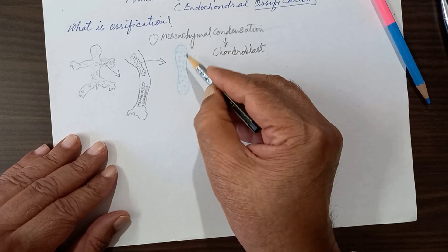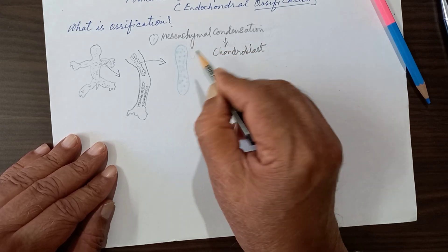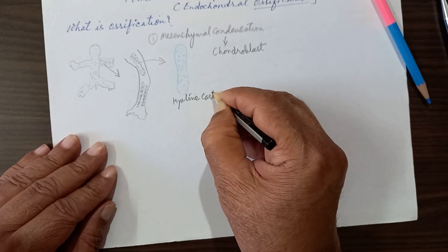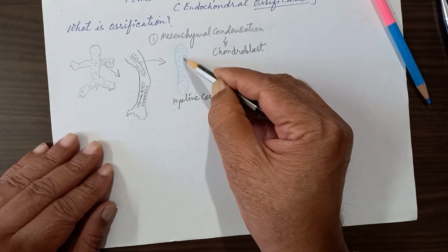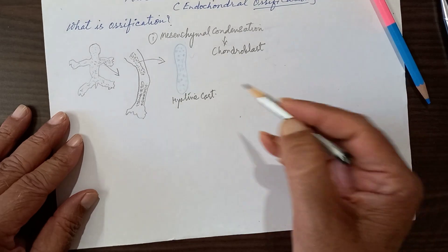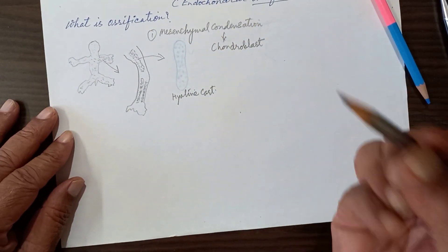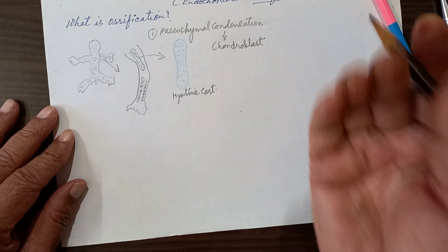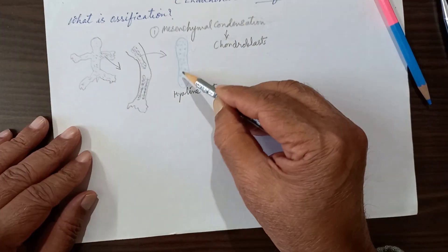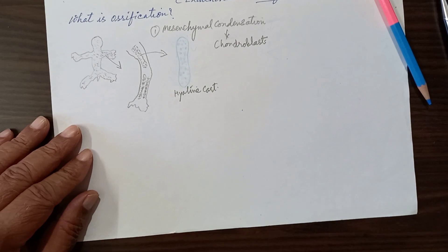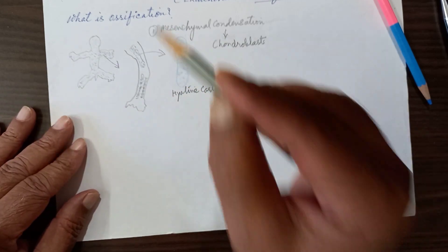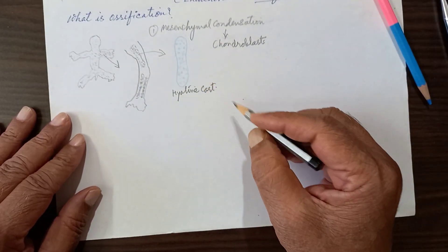The whole mesenchymal condensation is now cartilaginous cells, and this cartilage is a hyaline cartilage. This hyaline cartilage will ultimately be the base for bone formation in the arm — and that is the humerus, for example. All long bones will form like this. Mesenchymal cells change into chondroblasts, which secrete collagen fibers and matrix — the ground substance — and thus the whole model of a hyaline cartilage is formed.